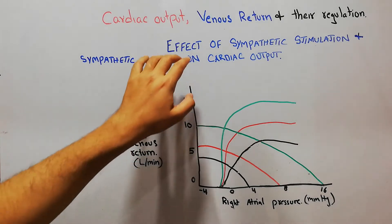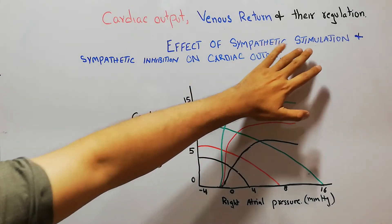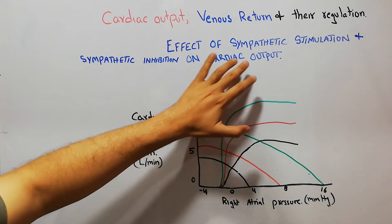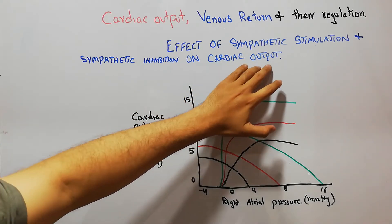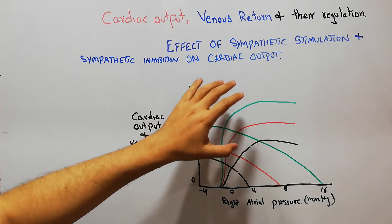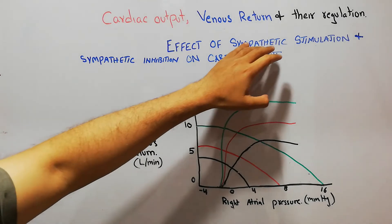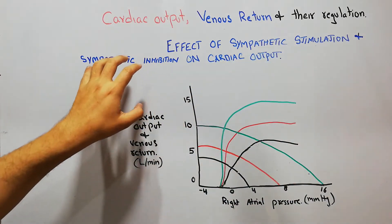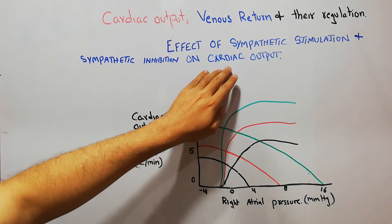In this lecture we are going to discuss the effect of sympathetic stimulation and sympathetic inhibition on cardiac output. What will be the effect of sympathetic nerve stimulation and sympathetic inhibition on cardiac output?